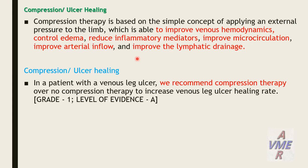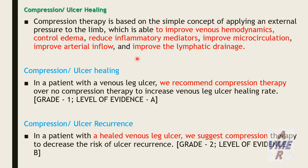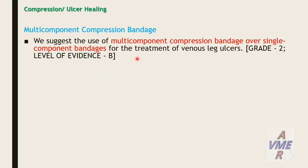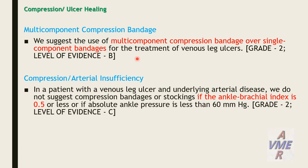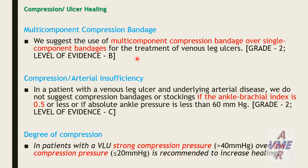We recommend compression therapy over no compression therapy to increase venous leg ulcer healing rates — American Venous Forum Level of Evidence 1A. In patients with healed venous ulcer, we suggest compression therapy to decrease risk of ulcer recurrence. Multi-component compression bandage is suggested over single component bandage for treatment. In patients with venous leg ulcer and underlying arterial disease, we do not suggest compression bandage or stocking if the ankle-brachial index is less than 0.5 or ankle pressure is less than 60 mmHg. Strong compression of more than 40 mmHg is better than low compression of less than 20 mmHg and is recommended to increase healing.